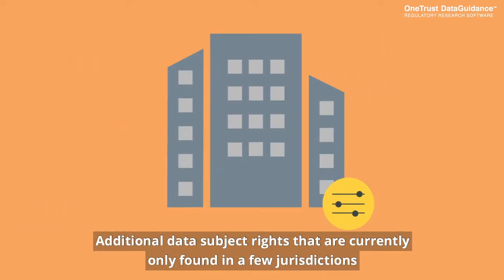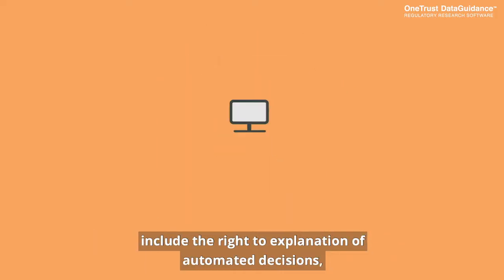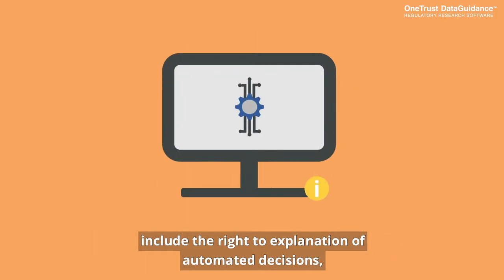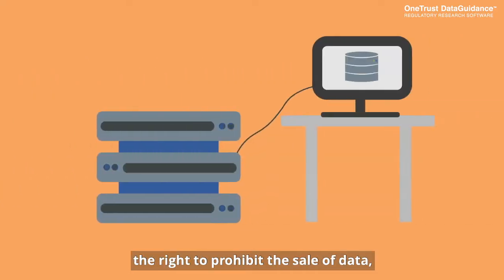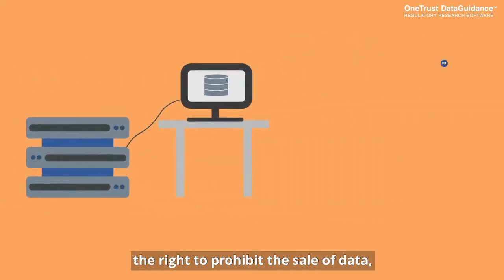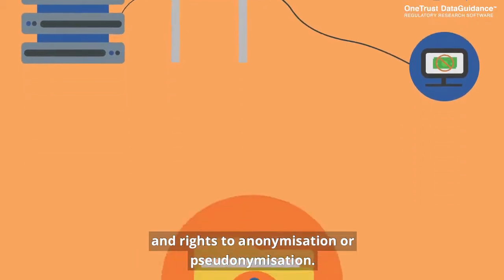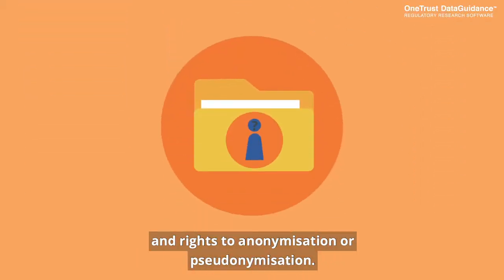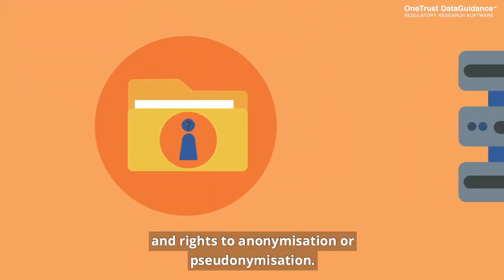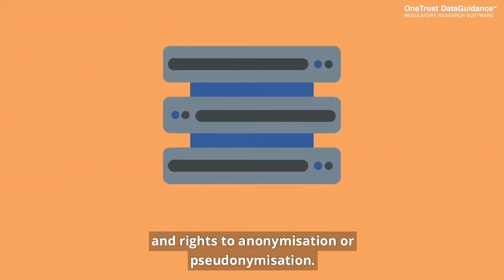Additional data subject rights that are currently only found in a few jurisdictions include the right to explanation of automated decisions, the right to prohibit the sale of data, and rights to anonymization and pseudonymization.